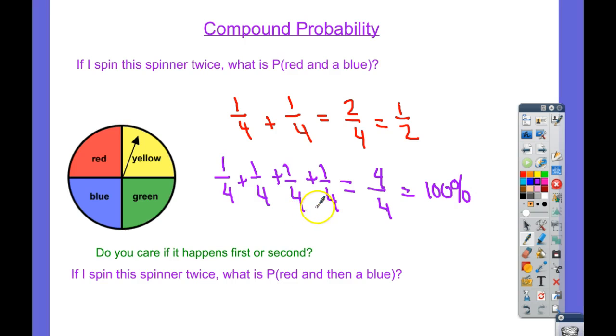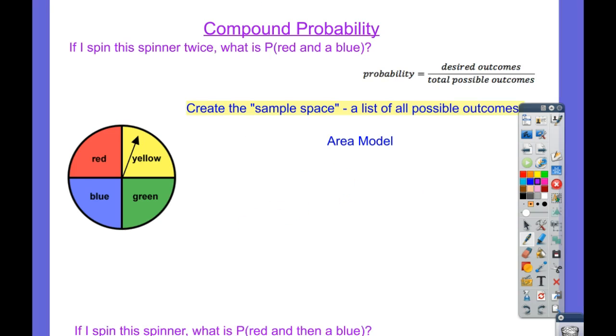We'll see why in a moment when we make the area model. So when we're looking at probability, we know we want desired outcomes over total possible outcomes. But how do I know all the total possible outcomes of two spins? Well, one way, we're going to make an area model.